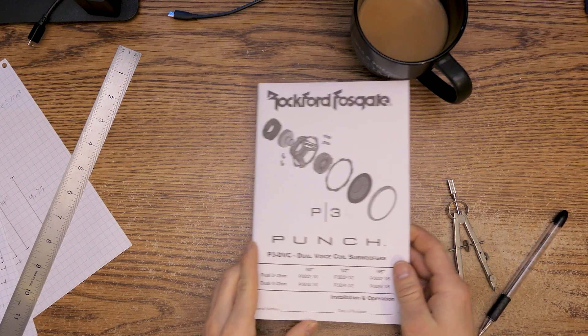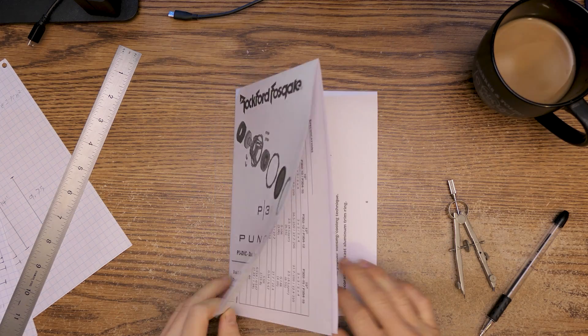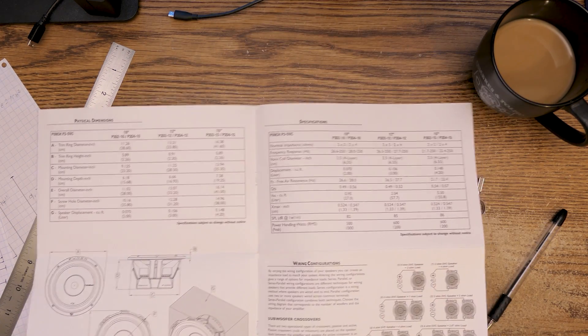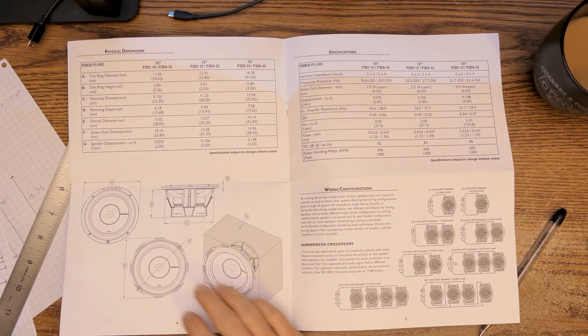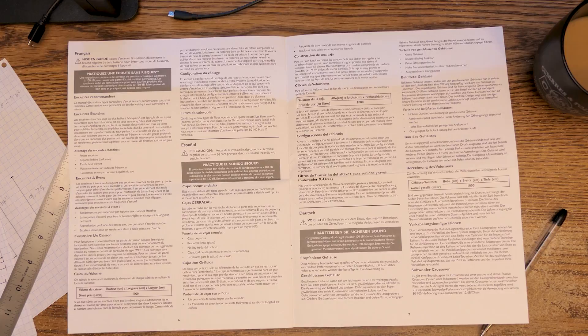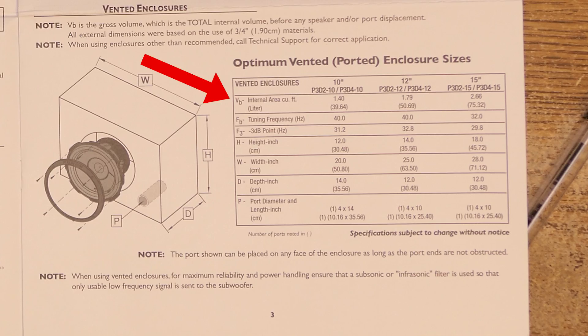Next, you will want to find some important recommended specs for the enclosure. Rockford Fosgate included these in the instructions, and most subwoofers should include this information. It's also not a bad idea to at least stay close to these specs if you can, unless you have a reason to change them. The internal area for this recommended ported enclosure for this Rockford 10-inch is 1.4 cubic feet. The tuning frequency is 40 hertz, height is 12 inches, width is 20, and the depth is 14. And this is with using 3/4 inch thick material.